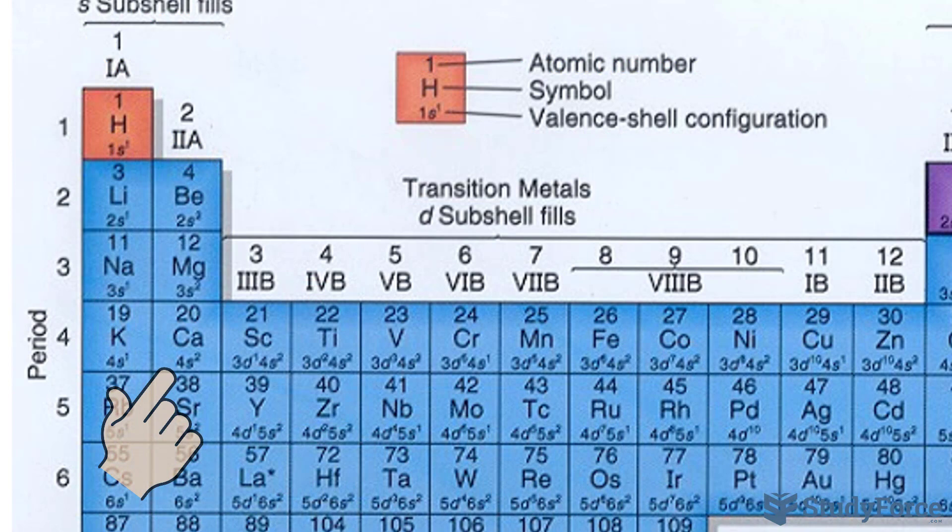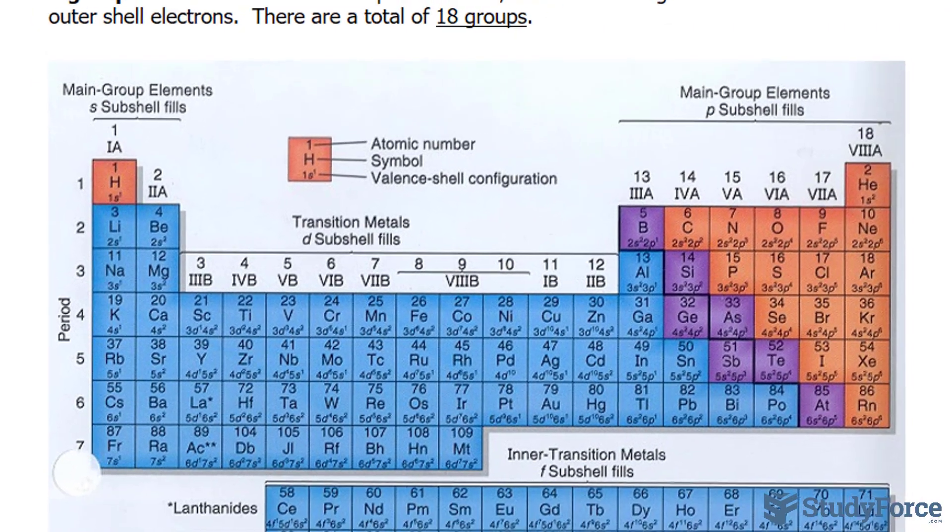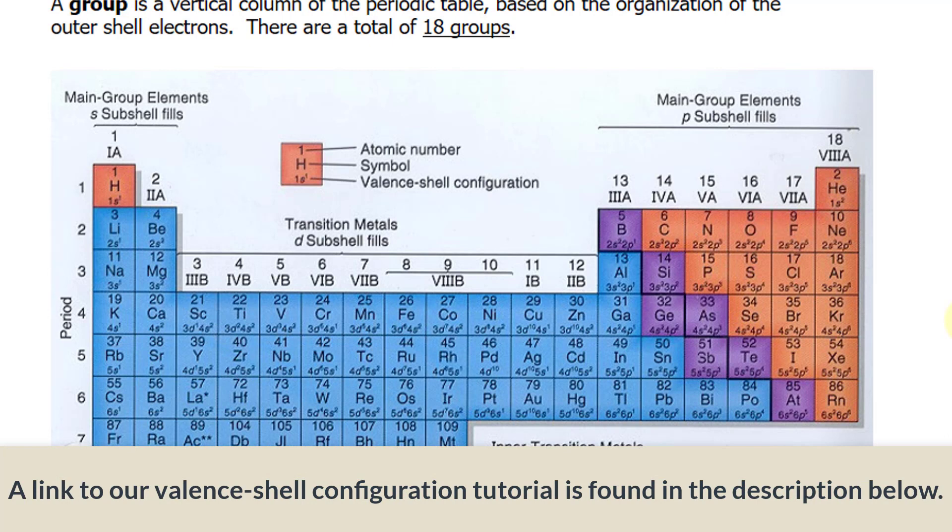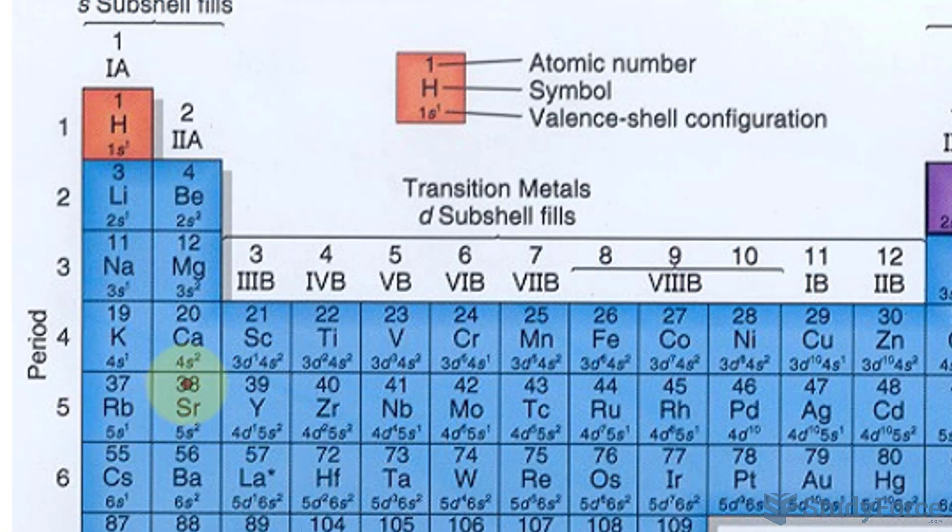Calcium has a valence shell configuration of 4s2, and to really understand where this number is coming from, you need to know how to write the electron configuration for an element. We won't be doing that in this video, so I recommend that you watch one of our previous videos, where I show you how to identify the valence electrons, the core electrons, and that's done by writing out the electron configuration. For the sake of simplicity, we'll just use the information here.